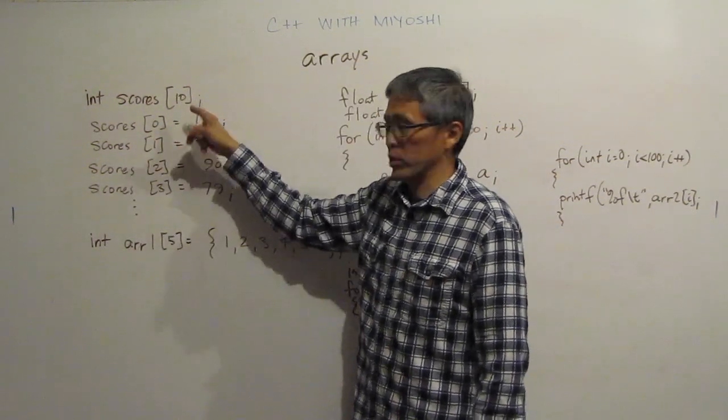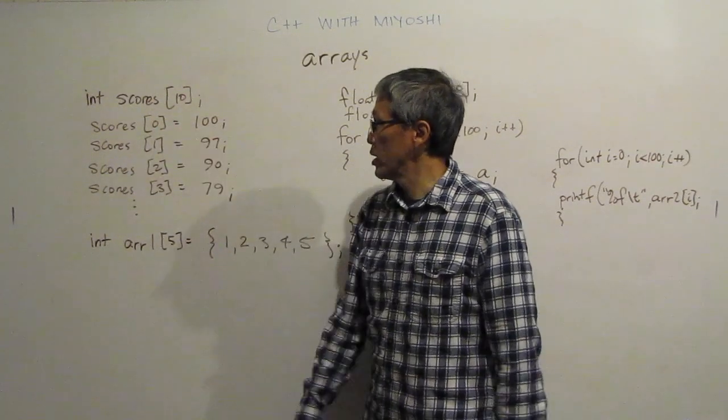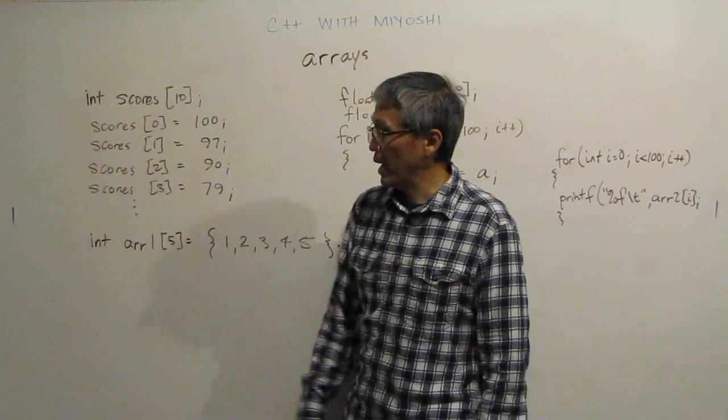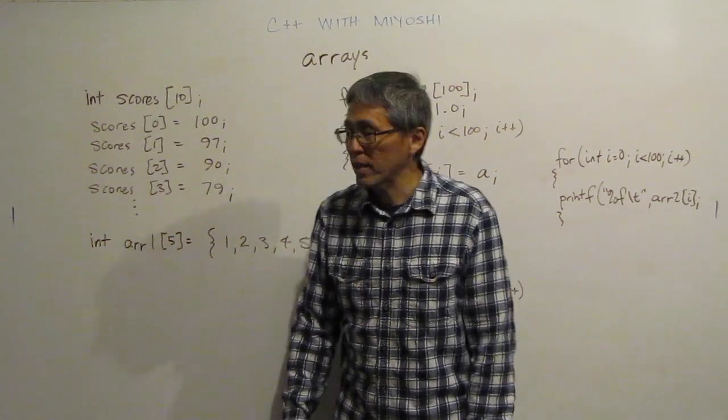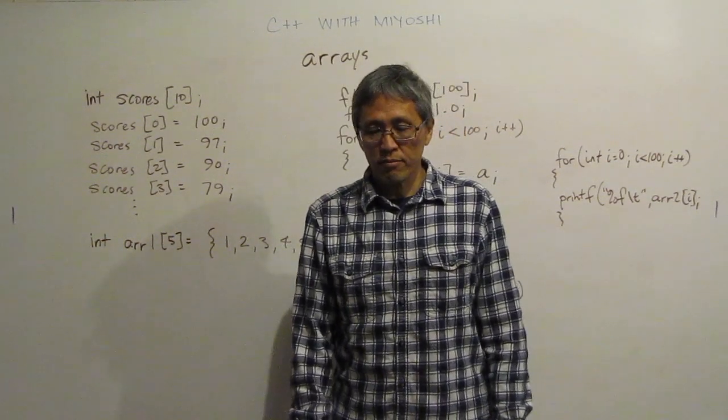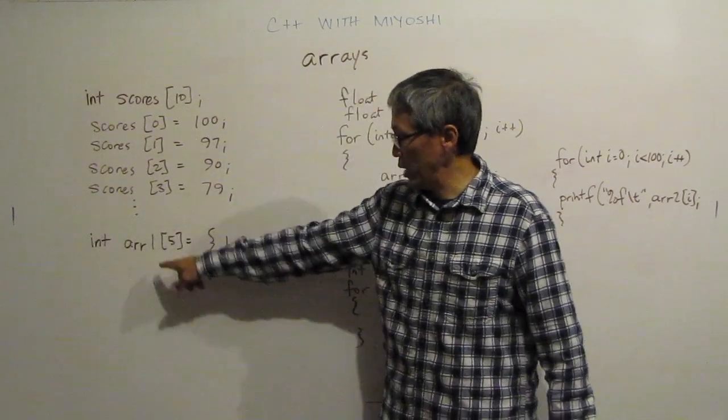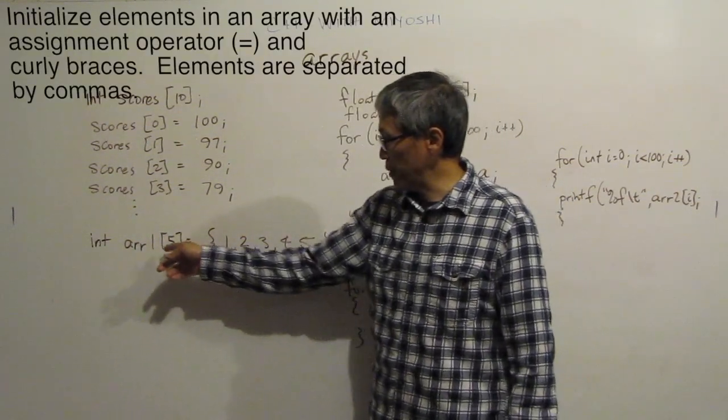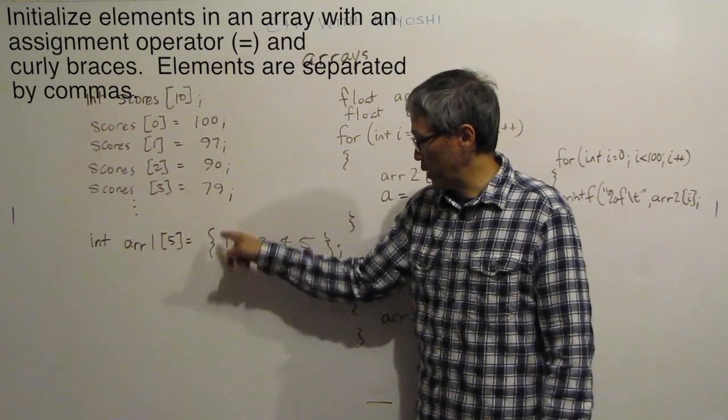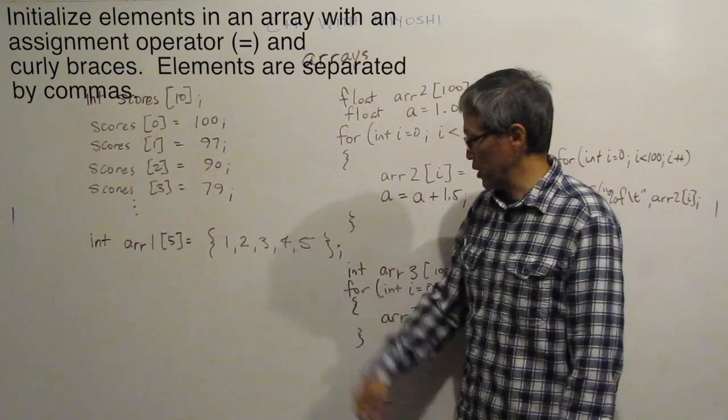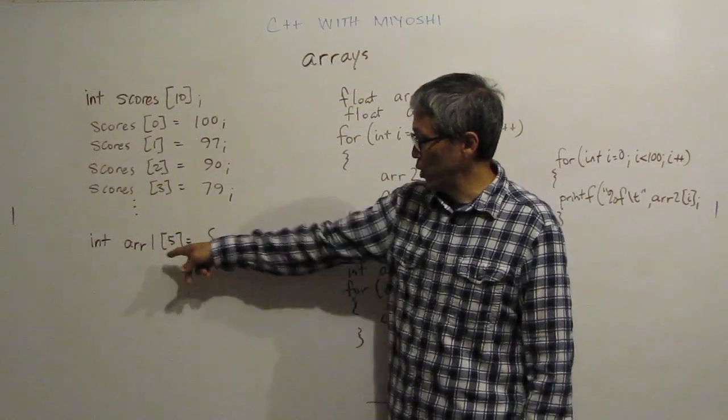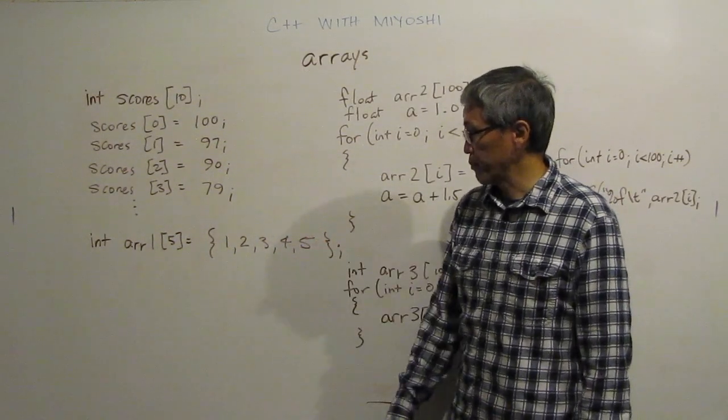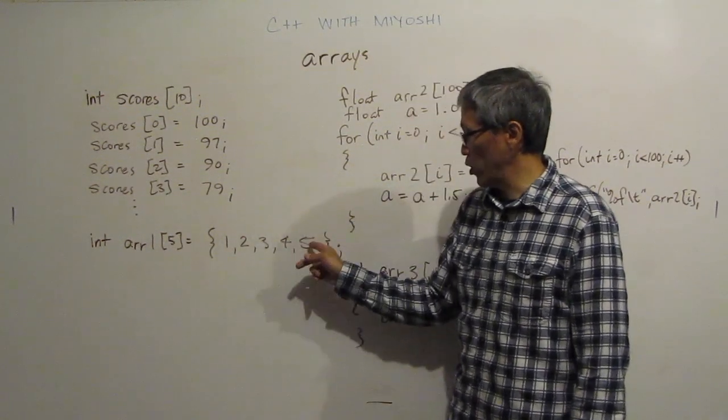So I have scores sub-zero, I have to address it individually and assign the value 100. And I have scores sub-1 as 97 and scores sub-2 as assigned the value 90 and so forth. I have to address each one of them individually. Now, if you just want to initialize them when you declare them, maybe I have this int array one sub-five, so I have five parts of my array. Then I can just do an assignment. I have an open curly brace and then I just assign the values what I need. So in this case, I have one goes into array one sub-zero, two goes into array one sub-one, and so on until I get to index number four. So array one sub-four would be a five.